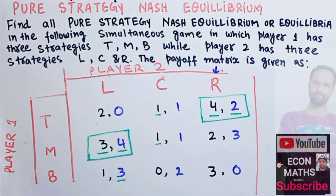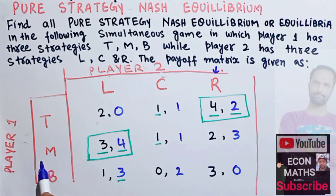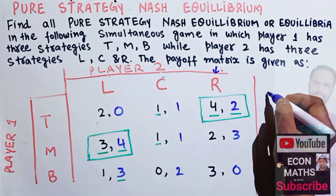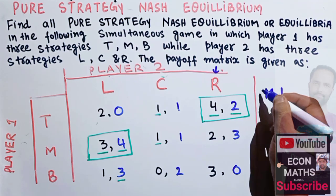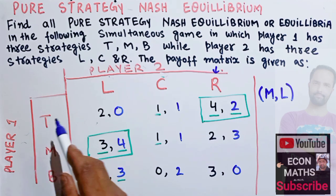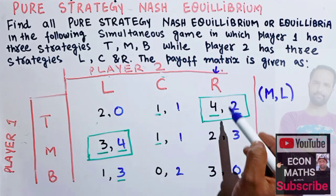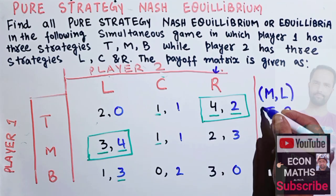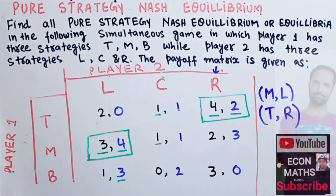We have two pure strategy Nash equilibria. The first is when Player 1 chooses M and Player 2 chooses L, giving us (M, L). The second is when Player 1 chooses T and Player 2 chooses R, giving us (T, R). Those are the two pure strategy Nash equilibria in this game.